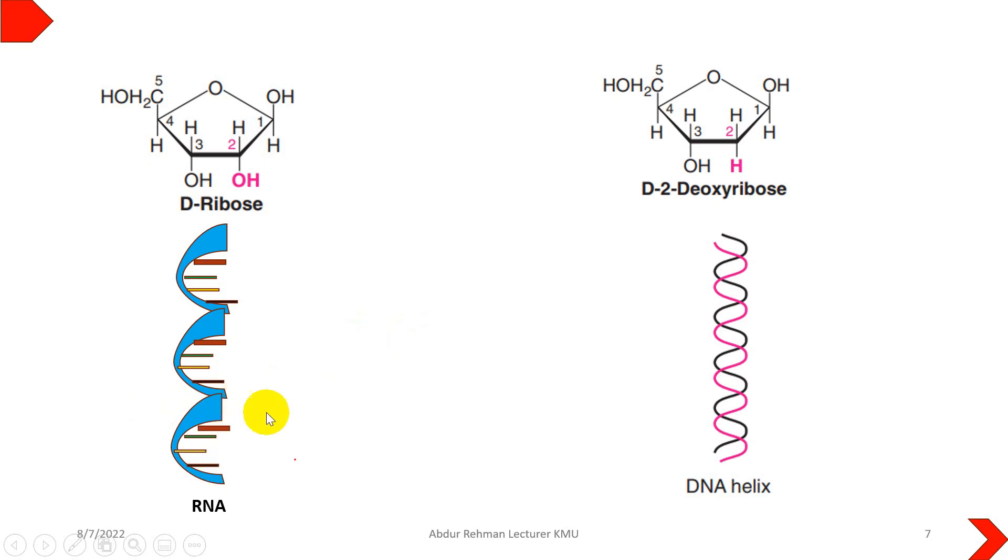So finally, ribose sugar is present in RNA so that it can be easily decomposed, while deoxyribose is present in DNA for stability or longevity, which means keeping the information intact.